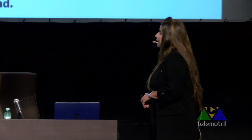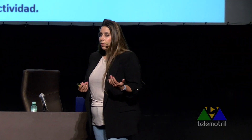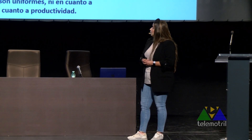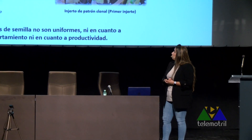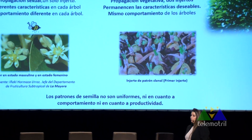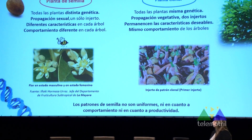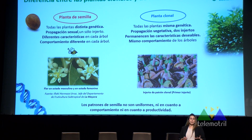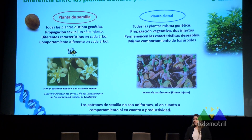¿Cuál es la diferencia entre un aguacate clonal y uno de semilla? El aguacate de semilla proviene de una polinización cruzada, hay un intercambio de genes fruto de la polinización de abejas u otros insectos. Tenemos una semilla fruto de un intercambio de genes que brota, la injertamos directamente con la variedad deseada, por ejemplo Hass o Lamhass. El problema es que tenemos semillas con diferentes genéticas: cada árbol es diferente.